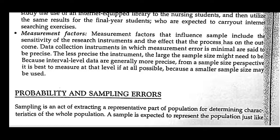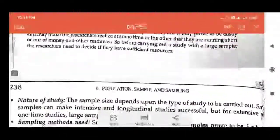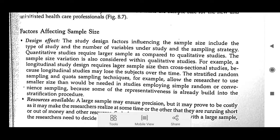The next factor is measurement factors. Measurement factors that influence sample size include the sensitivity of the research instrument and the effect that the data collection process has on outcome data. Data collection instruments in which measurement error is minimal are said to be precise. When collecting data using instruments like questionnaires, there should be no measurement errors — any error in the instrument will affect our study.